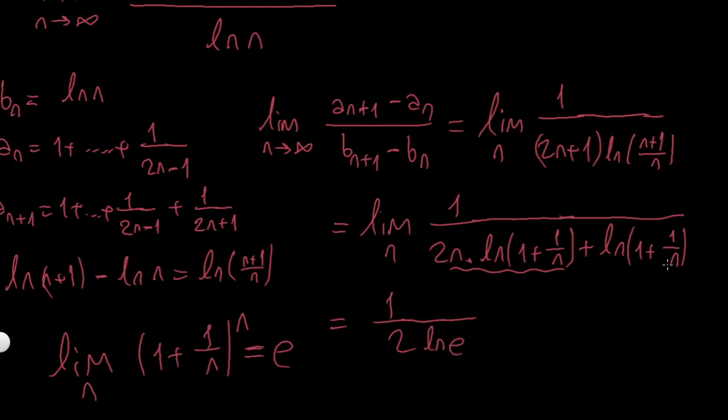and if this thing goes to infinity, it's just going to be ln 1, which is 0, so that's it. Ln of e is just equal to 1, so this is equal to 1 over 2, and this is our answer. Thank you.